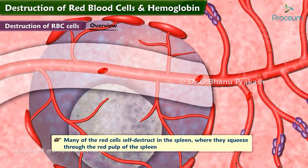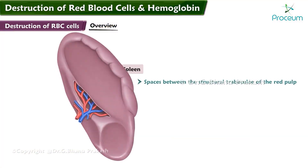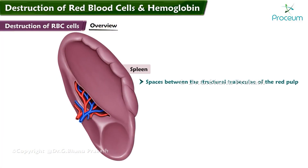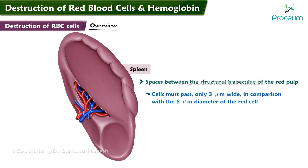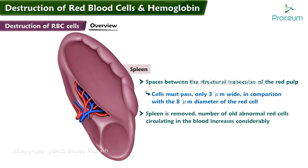Many of the red cells self-destruct in the spleen, where they squeeze through the red pulp of the spleen. The spaces between the structural trabeculae of the red pulp through which most cells must pass are only three micrometers wide, compared with the eight micrometer diameter of the red cell. When the spleen is removed, the number of old abnormal red cells circulating in the blood increases considerably.